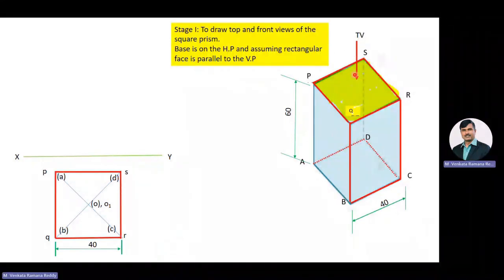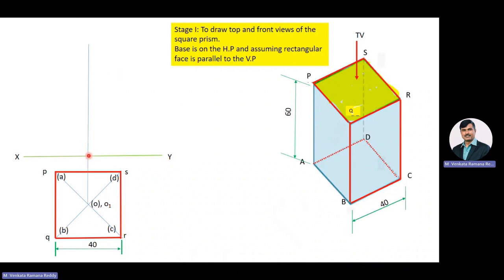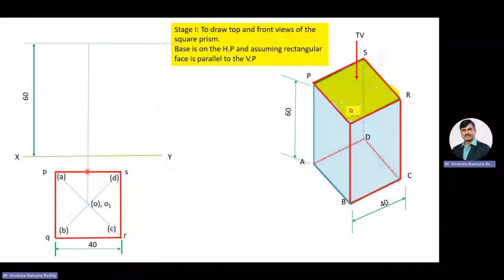After drawing the top view of the square prism, we will draw its related front view. For that, draw projectors passing through points P, Q, R, S, and O towards the vertical plane. As a first step, draw a projector passing through point O towards the vertical plane. Then from the reference line, with the given axis height of 60 mm, draw a line parallel to the XY line. After that, draw projectors passing through points P, Q, R, and S towards the vertical plane.